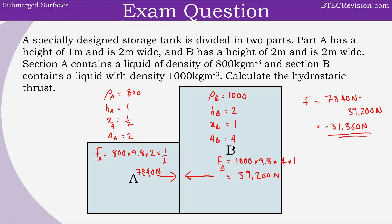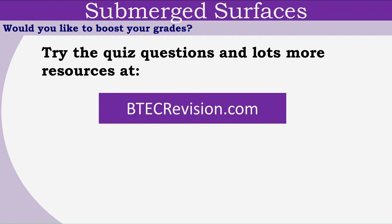An important point to note is that the negative sign represents the direction. Since we are considering right to be positive and left to be negative, we get a negative value here because the force from the right is bigger and it's pushing towards the left. That's the end of the lesson. If you'd like to boost your grades, try the quiz questions at btechrevision.com. See you next lesson.